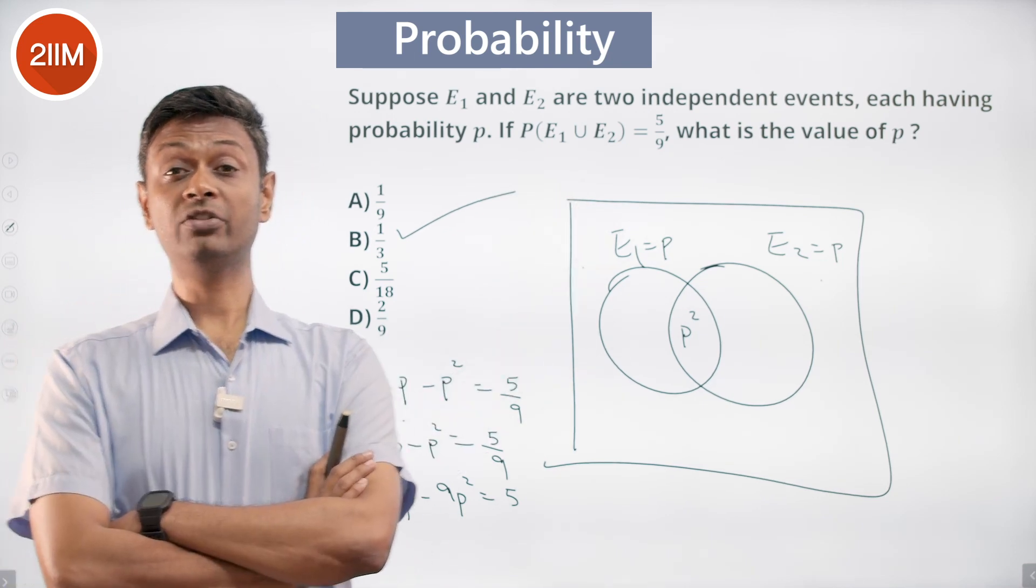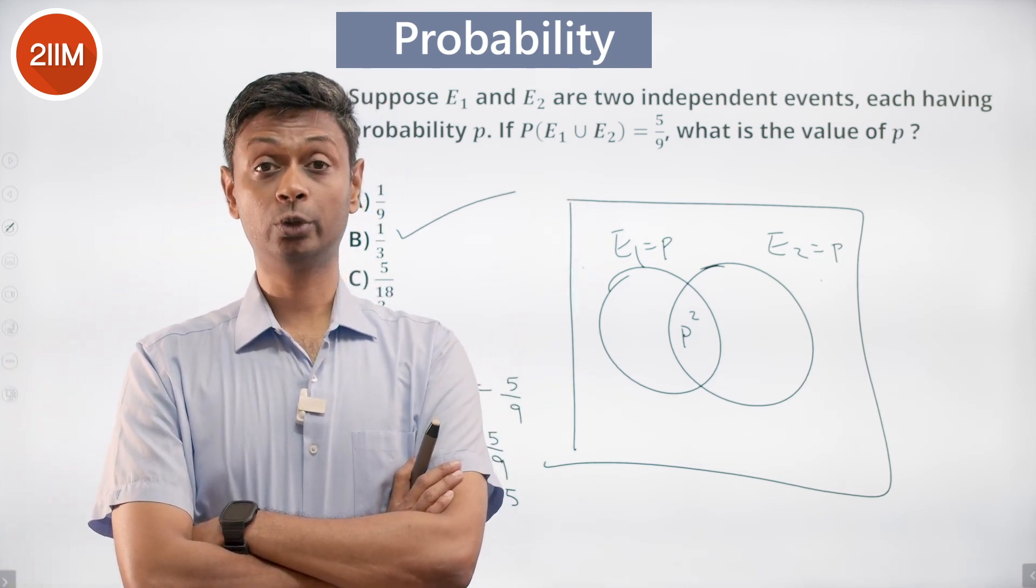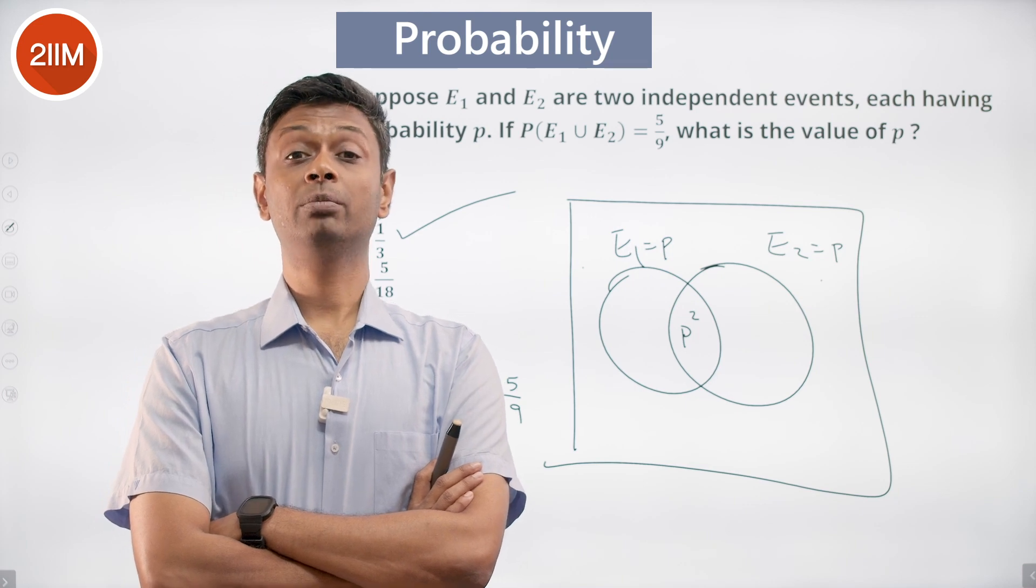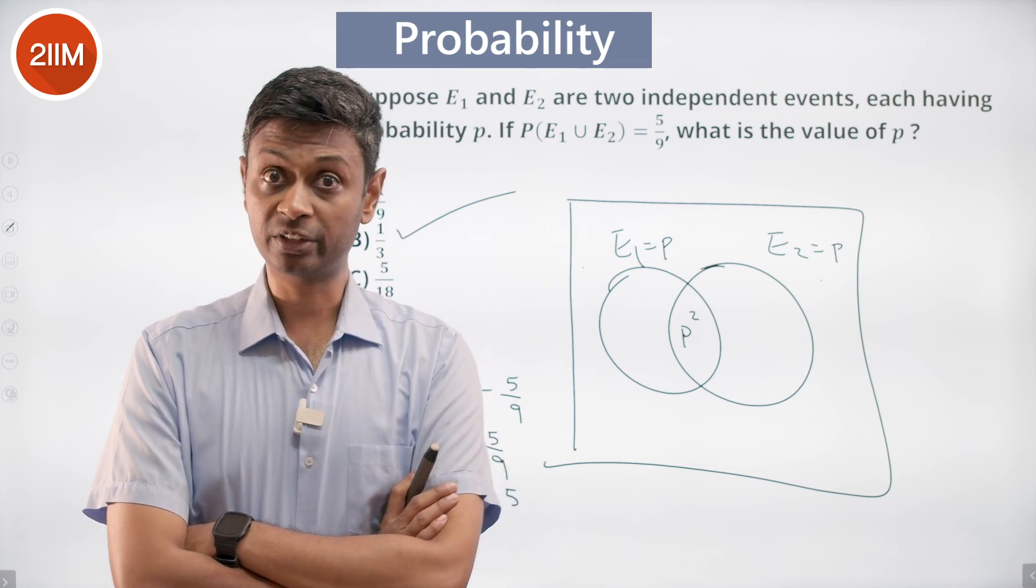Idea here: probability of two independent events is the product of the probabilities of the two events. Probability of a union b is probability of a plus probability of b minus probability of a intersection b.